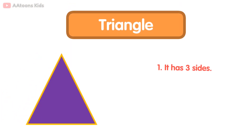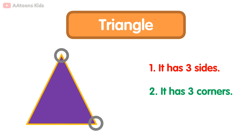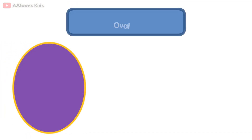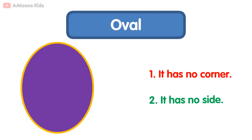Triangle. It has three sides: one, two, three. It has three corners: one, two, three. Oval. It has no corner. It has no side.